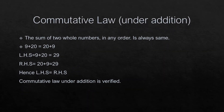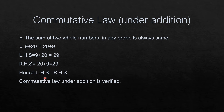Commutative law under addition: in this law we are taking two whole numbers. The sum of two whole numbers in any order is always the same. We are taking two whole numbers 9 and 20. 9 plus 20 is equal to 20 plus 9. Left hand side is 9 plus 20 which equals 29, and the right hand side 20 plus 9 is also 29. Left hand side is equal to right hand side — order does not matter, result is same. Hence, commutative law under addition is verified.